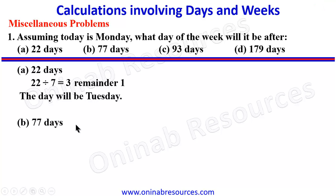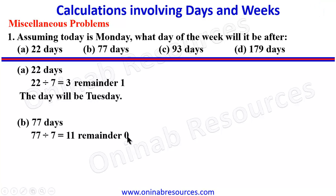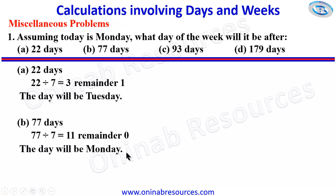We go for B: 77 days. We divide 77 by 7, giving us 11 remainder 0. Since there is no remainder, meaning after 77 days, if today is Monday, we are still going to have the day be Monday. So the day will be Monday.